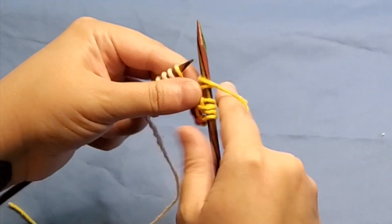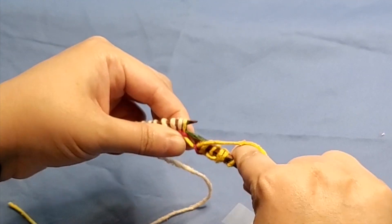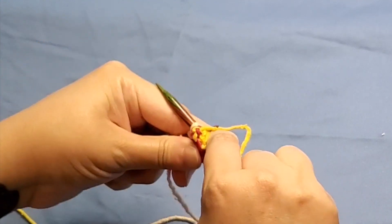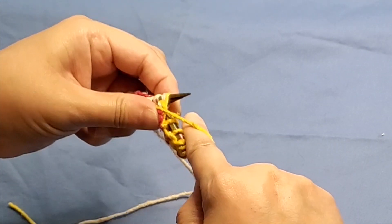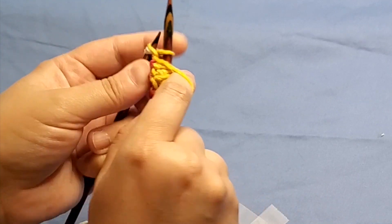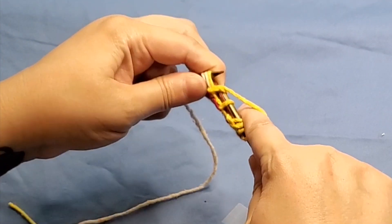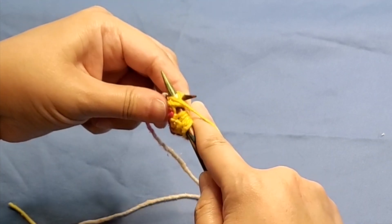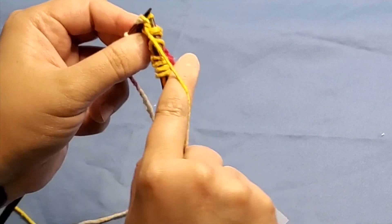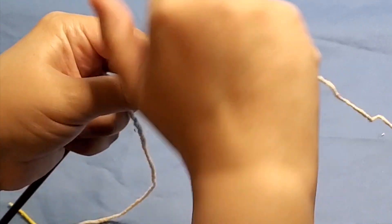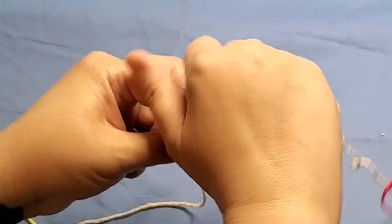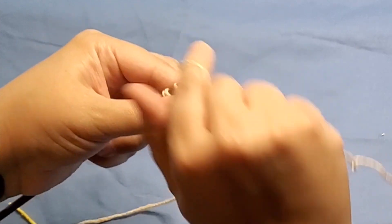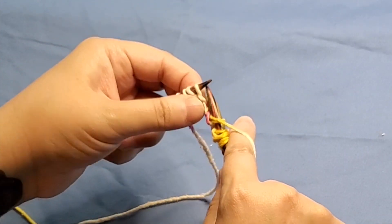And then again, you're going to do the purl three together. That's one, two, three. Do your yarn over. And then purl the same three stitches together again. Right like that. I'm going to knit one. And you're going to do one more daisy stitch at the end of your row.